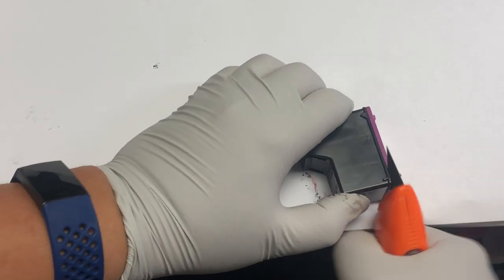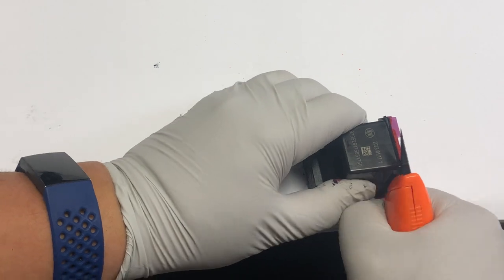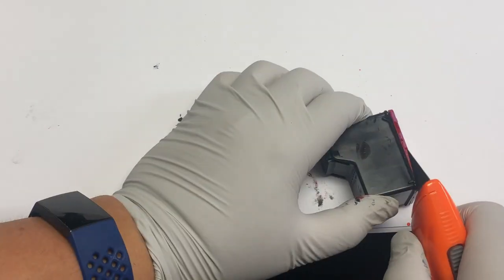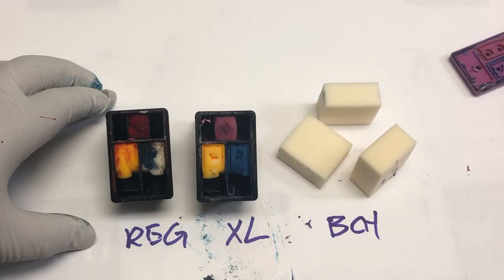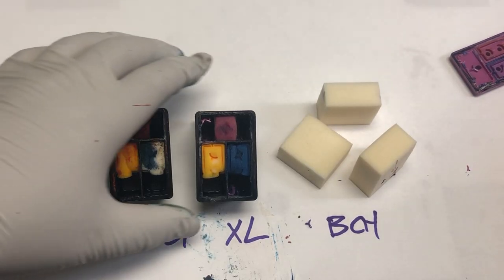For the color ink, it's the same chore. Cut and rotate, cut and rotate. We can see there's not much difference in the sponge size between the regular and the XL.